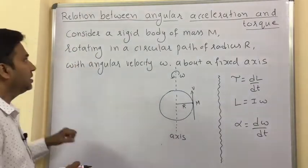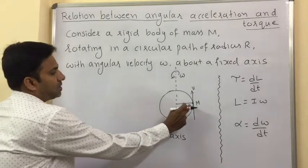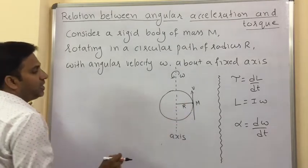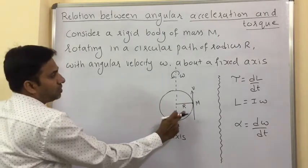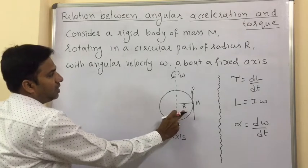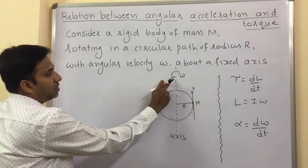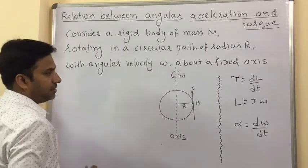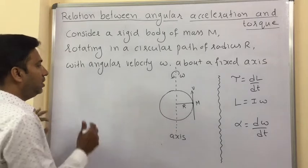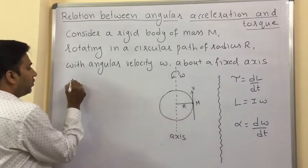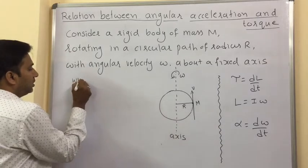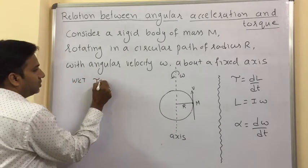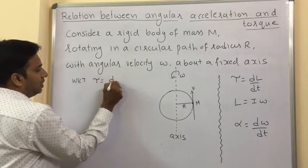Now let us see the relationship. Consider a rigid body of mass m. This body is rotating in a circular path of radius r with angular velocity omega about a fixed axis.